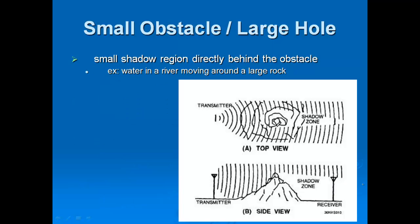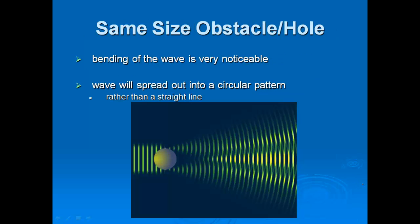Here's one example with water moving down a river. If you look down from the top, you can see there's going to be a zone behind the rock that the waves don't seem to appear to go. If you look at it from the side, you can see the same thing. Here are some pictures that give you that idea. The same size object and hole, then you get a real nice bending.